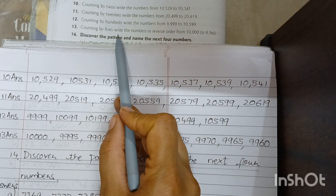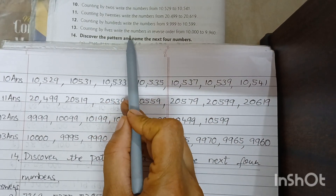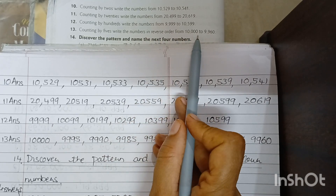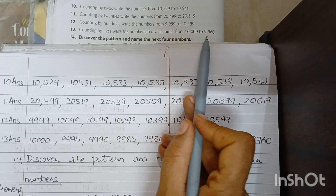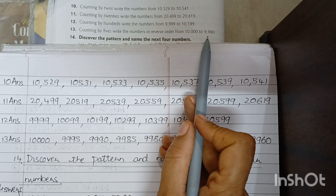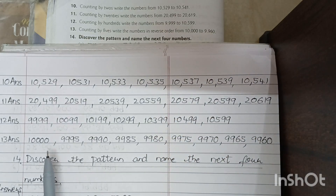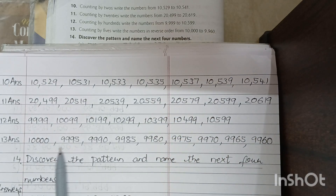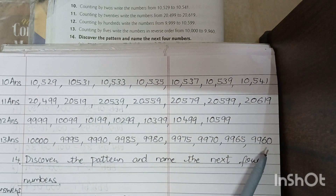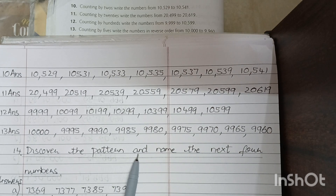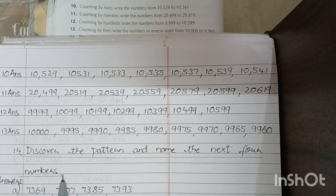Counting by fives, write the numbers in reverse order from 10,000 to 9,960. This is reverse order.